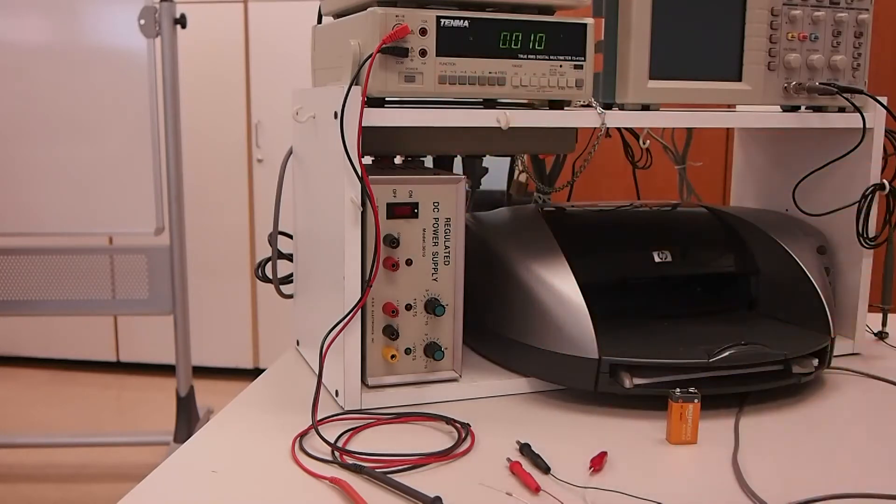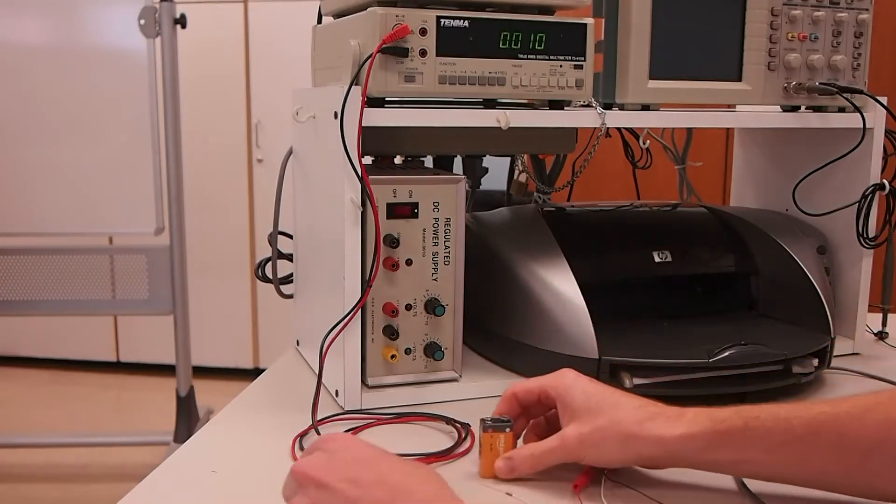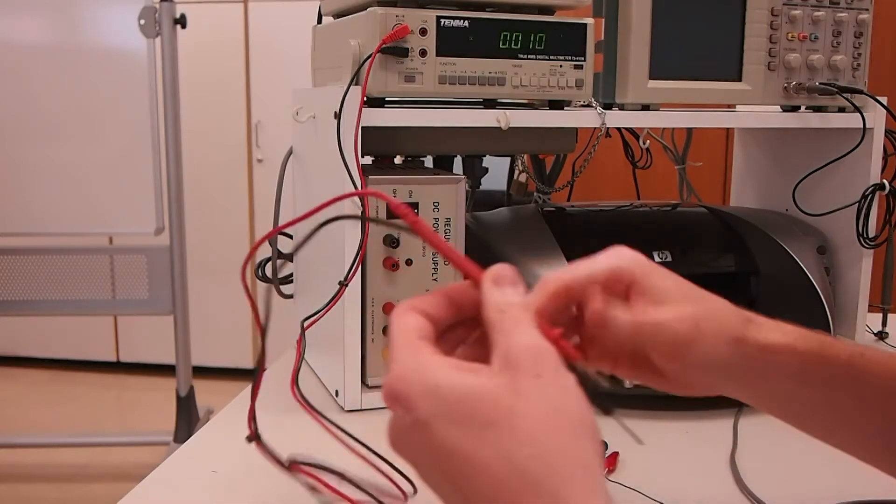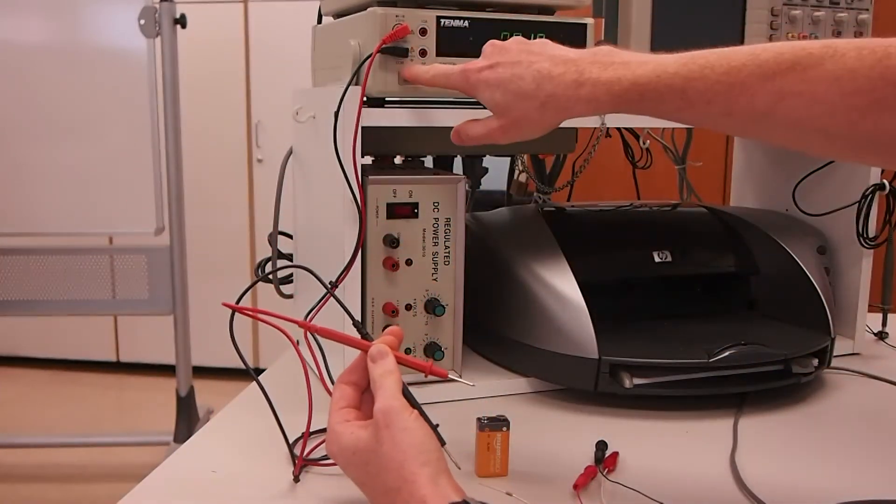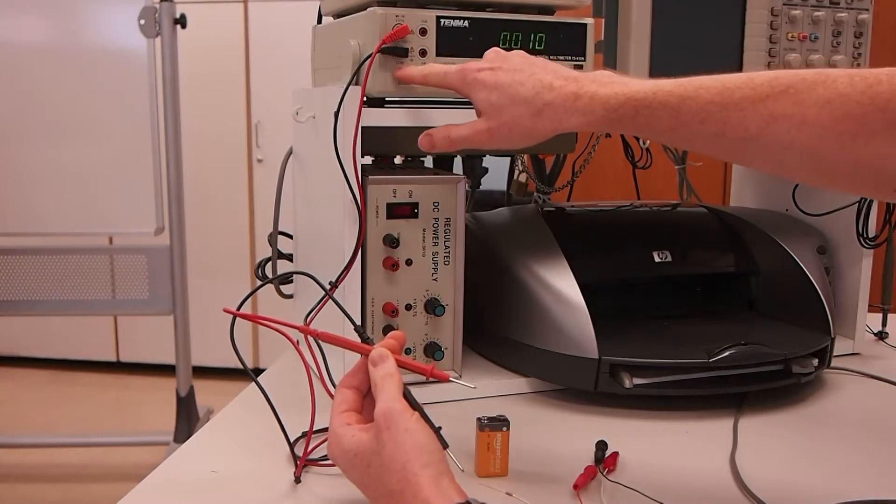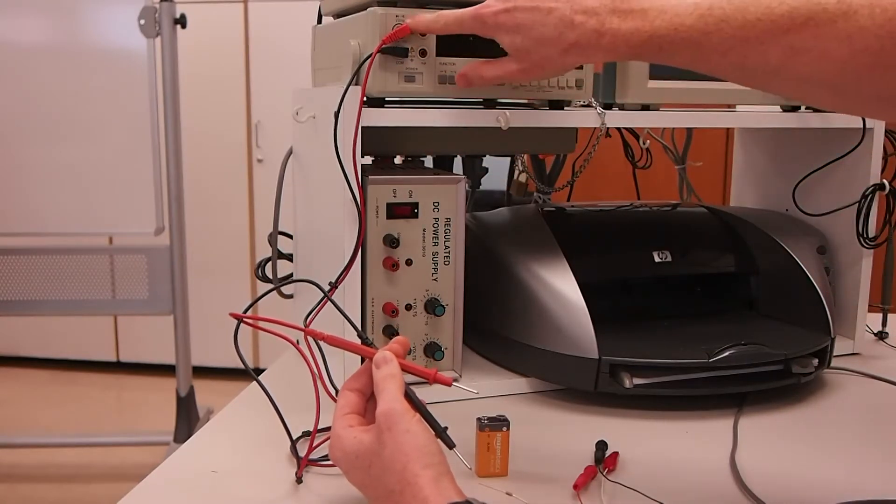So again, press this button for DC voltage. And I've got a 9 volt battery here that we can measure just as a test. The meter has two leads, a red and a black. The black is going to be plugged into COM here, the common ground point. And the red into this top measurement point.